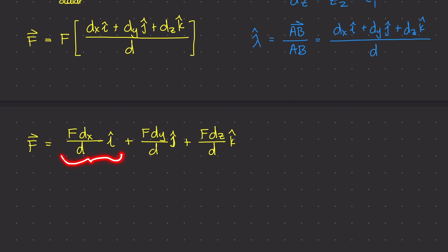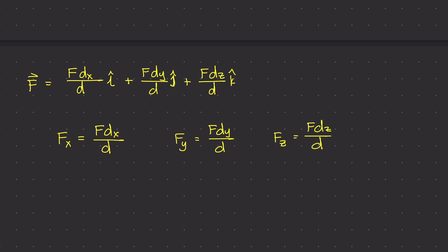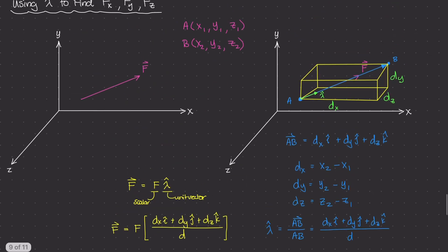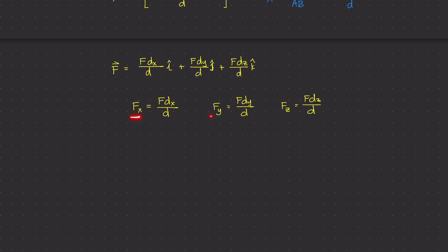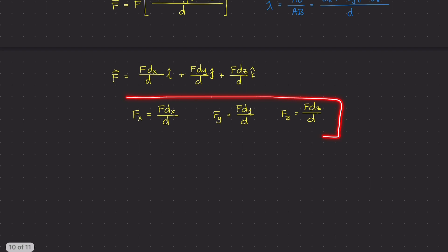So the scalar components are: Fx = F·dx/d, Fy = F·dy/d, and Fz = F·dz/d. If we know two points A and B, we can figure out the x, y, and z components of the force by taking the magnitude F and multiplying it by the ratio dx/d, dy/d, or dz/d, depending on which component you need. That's how we use lambda to figure out the force components of any force in space.